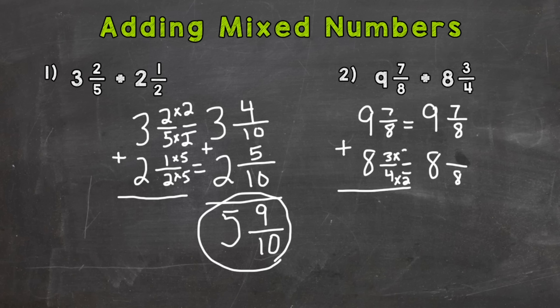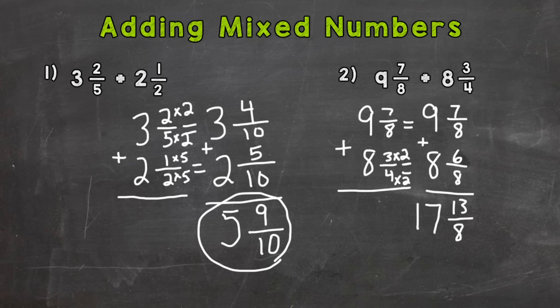Three times two is six, so three-fourths is the same as six-eighths — they hold the same value, we just renamed it to have a denominator of eight. Now we're ready to add because the fractional parts have a common denominator. Seven plus six is thirteen; keep the denominator of eight. Nine plus eight is seventeen, so our answer is seventeen and thirteen-eighths.